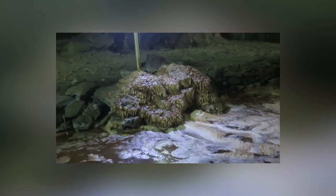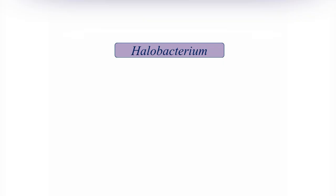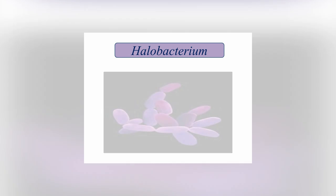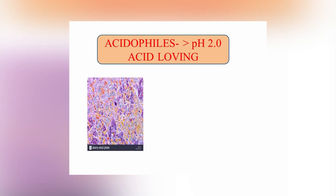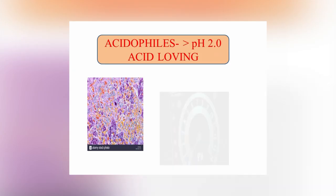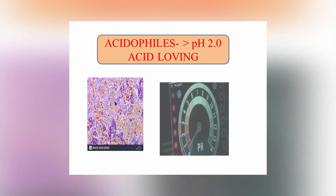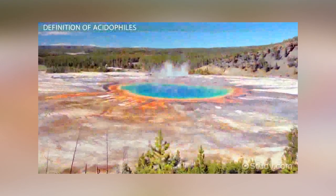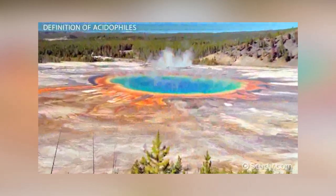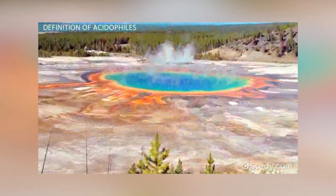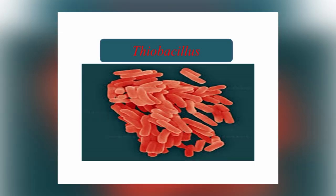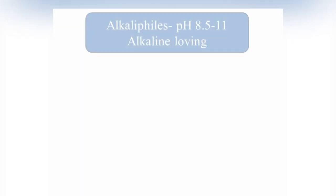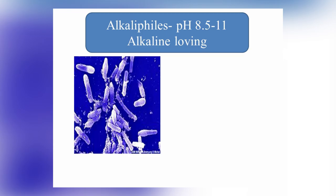In this group most of them are bacteria while some are very primitive eukaryotes. For example, Halobacterium. Acidophiles are those that thrive under highly acidic conditions, usually at a pH of 2 or below. For example, Thiobacillus.